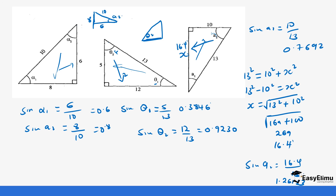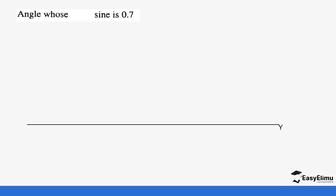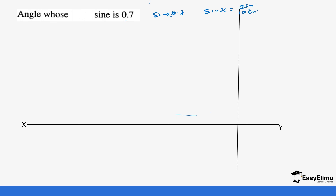That's how we calculate the sine of angles. Sometimes you can also draw using scale drawing. For example, sine of 0.7 means the sine of an angle is 0.7, which means sine x equals 7 over 10 — so 7 centimeters is our opposite side and 10 centimeters is our hypotenuse. You start by drawing a line of any measurement.